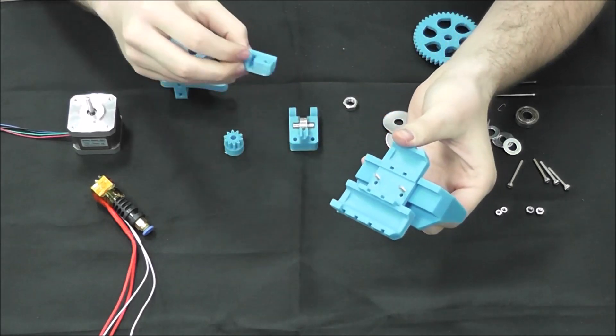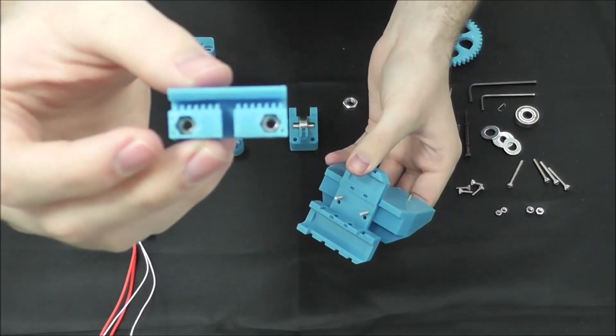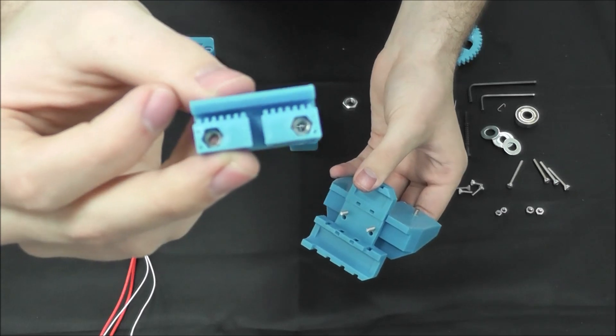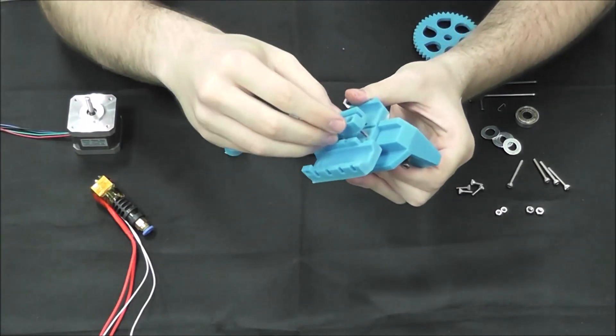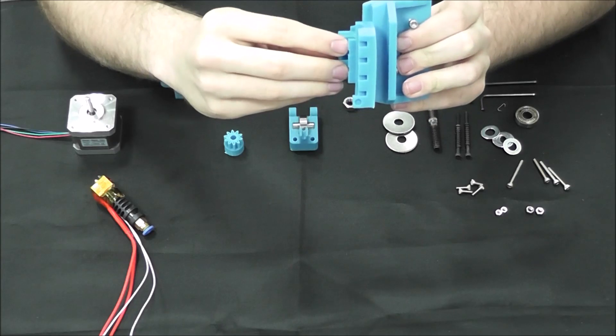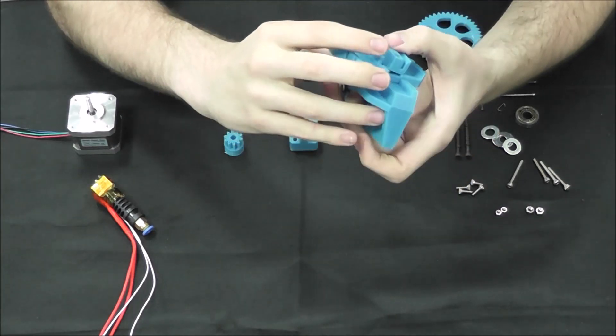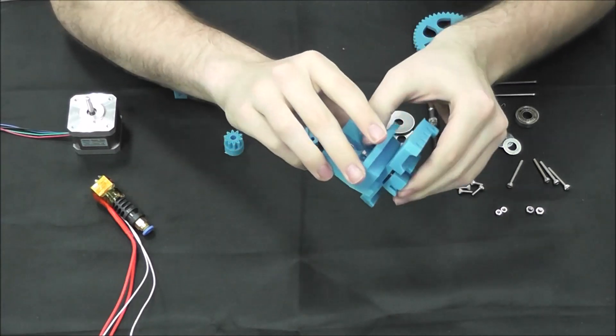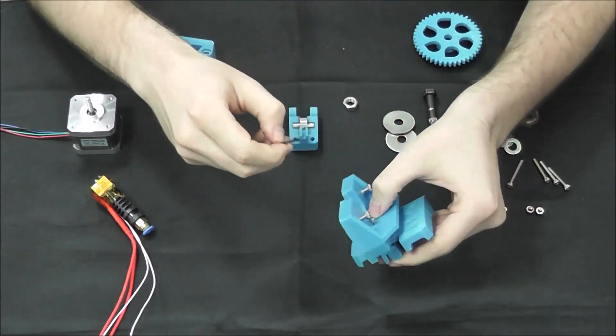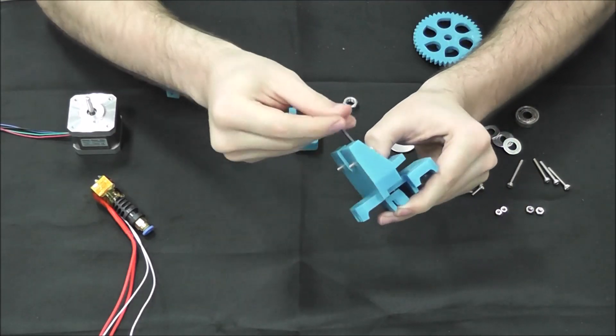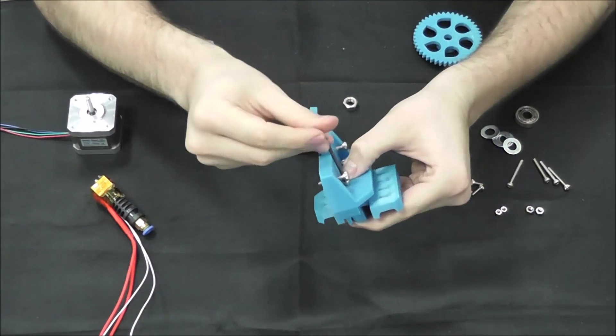And then over that, the X belt holder has two M3 nuts on the inside and we'll attach that with teeth facing up to the whole entire assembly. So we will use our allen key to tighten that and get it secured on there.